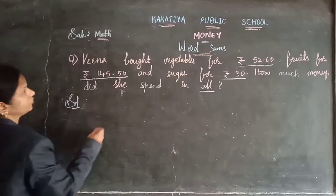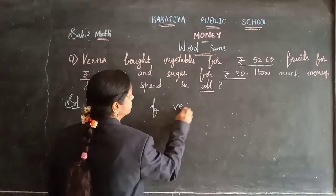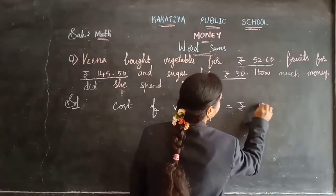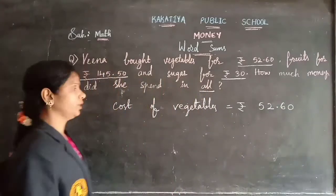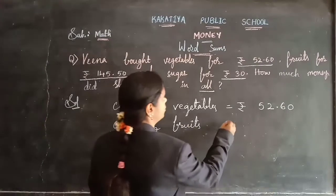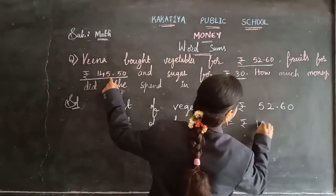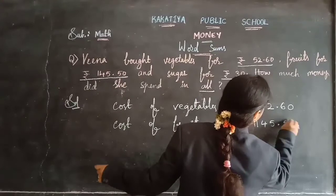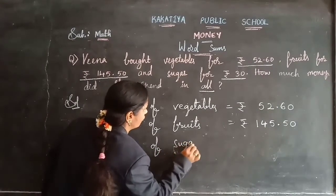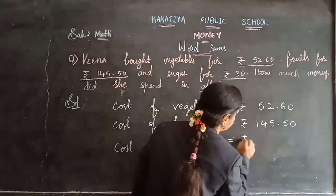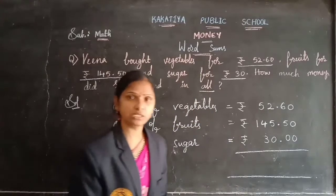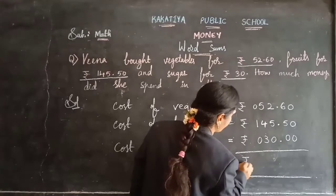First step: cost of vegetables — she bought vegetables for 52 rupees 60 paise. Next: cost of fruits — fruits cost 145 rupees 50 paise. Coming to sugar: cost of sugar is 30 rupees. Since paise is not given for sugar, we can take 0 in the paise place. Wherever you don't have the paise value, you can take 0 in that place.